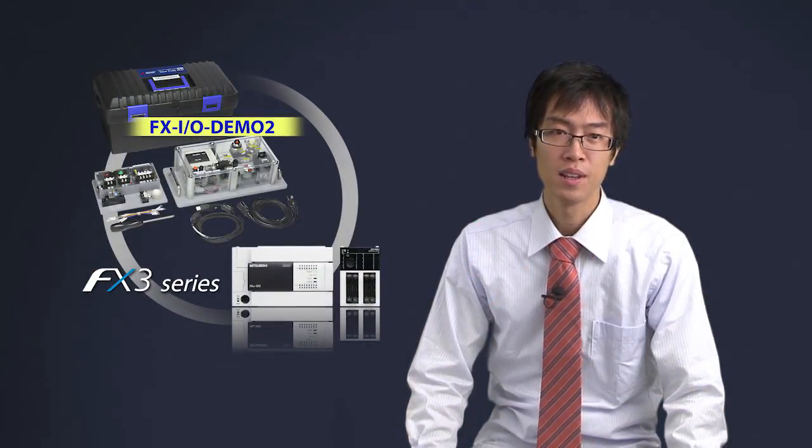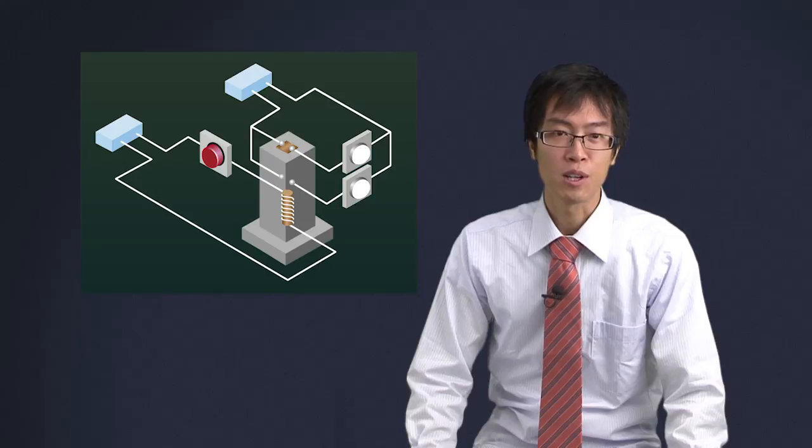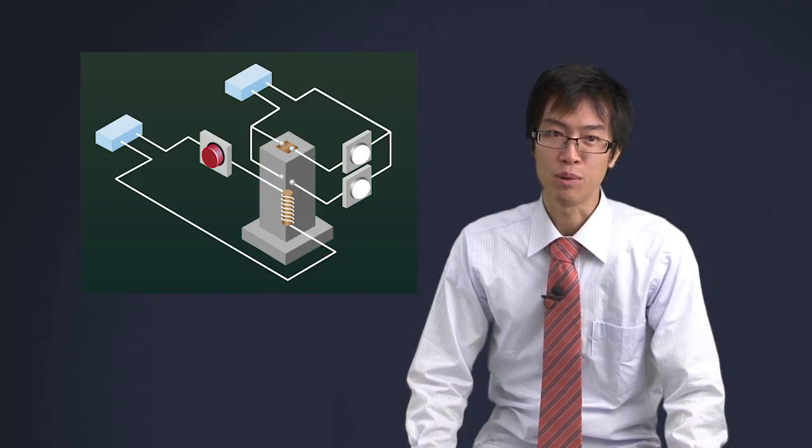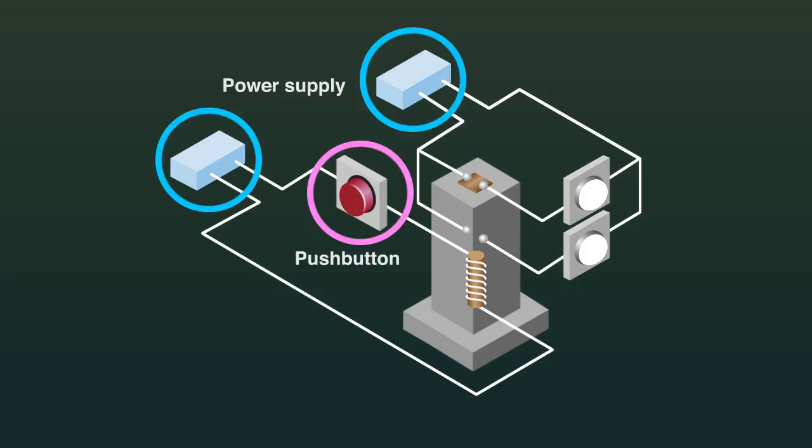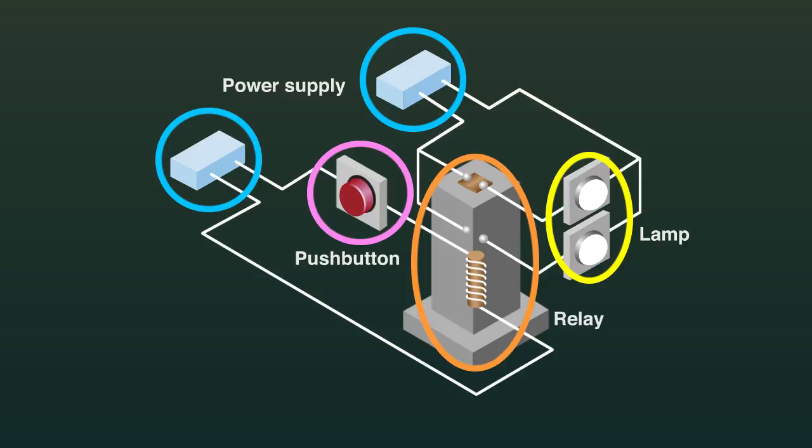Next, let me explain sequence control using an electrical schematic diagram. In this electrical schematic diagram example, power supply, push button switch, light and relay are wired.